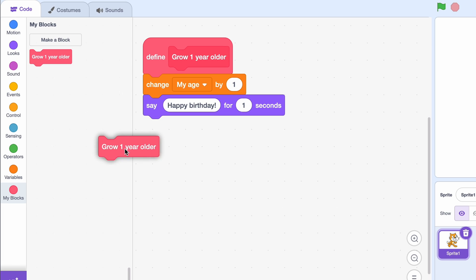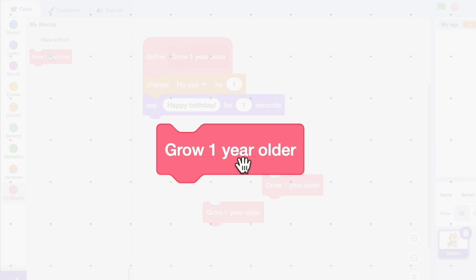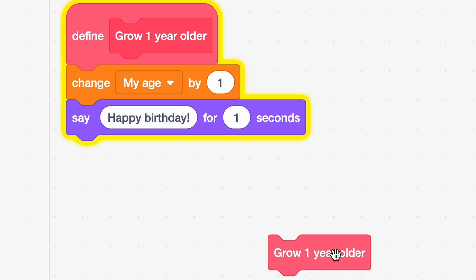You can then use this custom block wherever you want, and however many times you want. Once the Scratch editor runs the custom block, it runs all the code you put under the custom block definition.